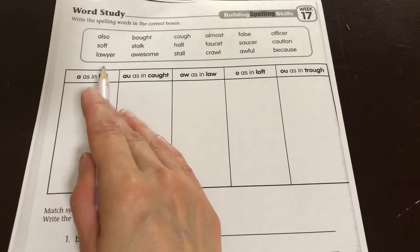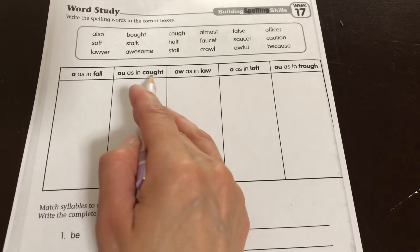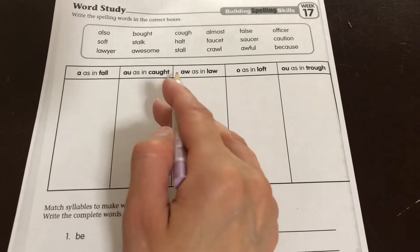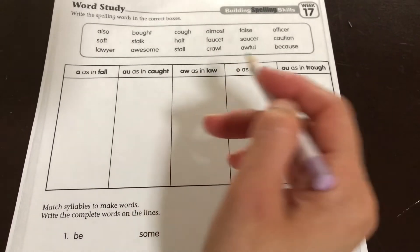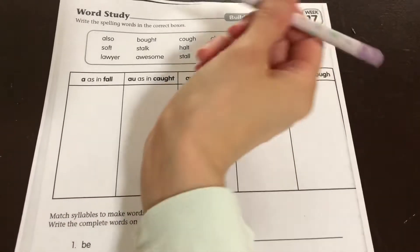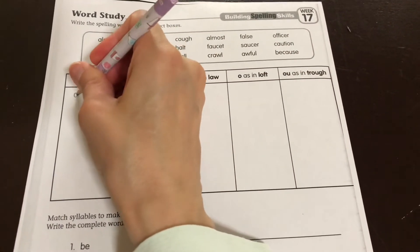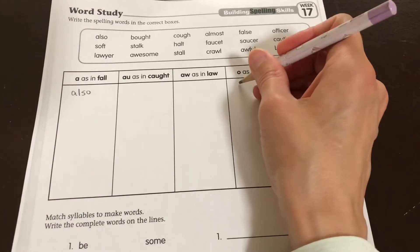So we have fault. So this is aw. We have caught. So this is aw as in caught. Law. So aw. It's generally going to be how it's spelled. So we have also, because all of these make aw sounds, soft...